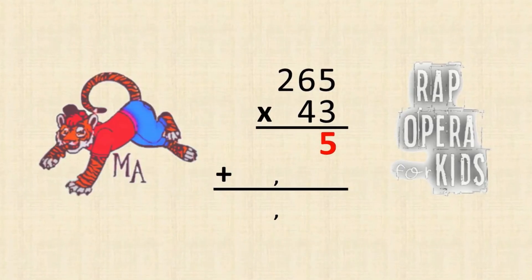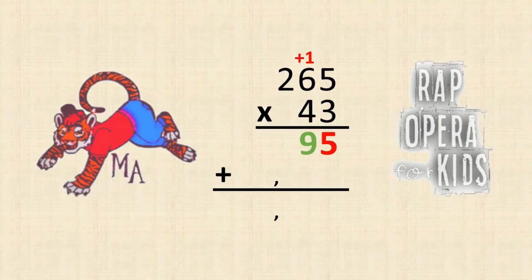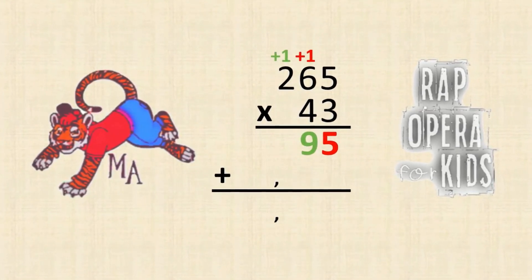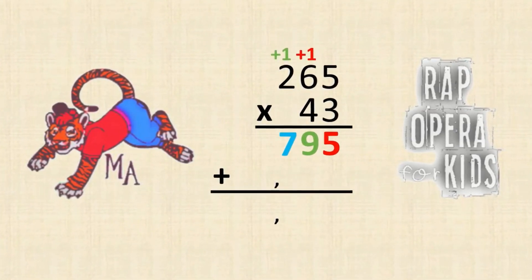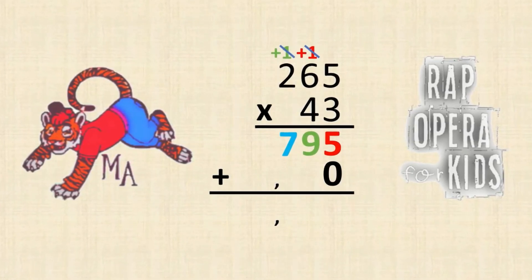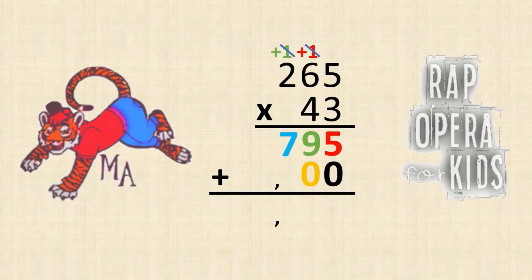Ones to ones, regroup if you need to. Ones to tens, regroup if you need to. Ones to hundreds, regroup if you need to. Keep going till the end, add the zero.